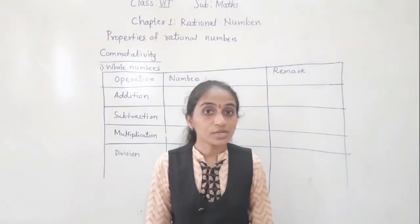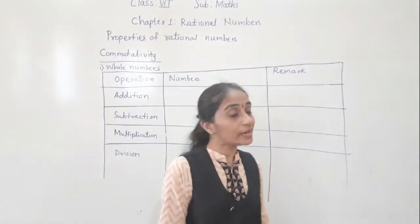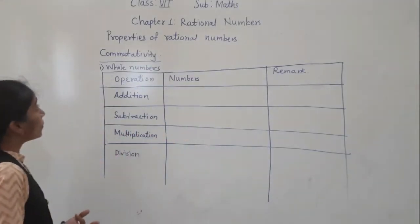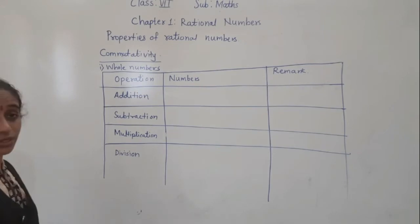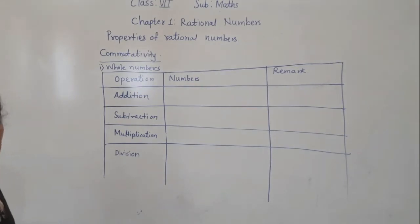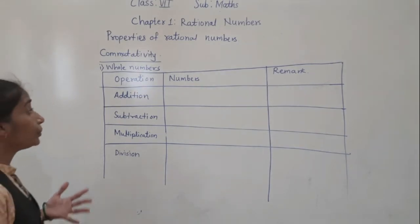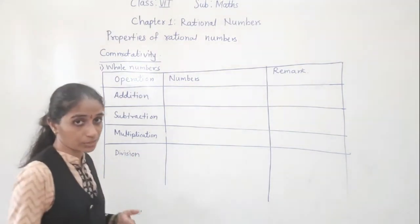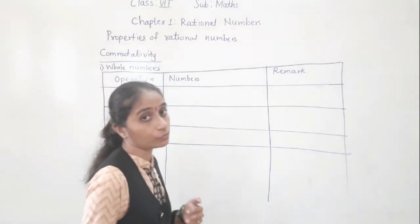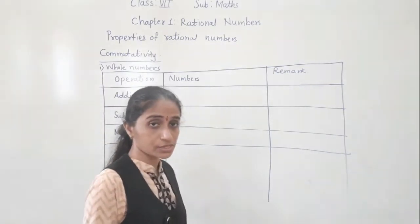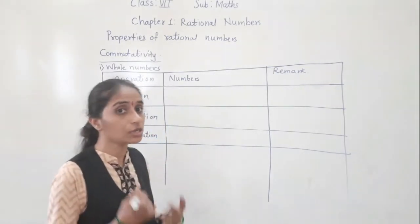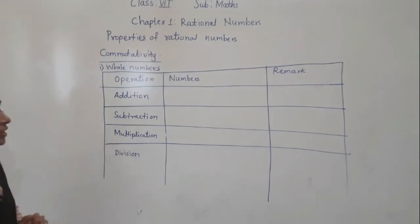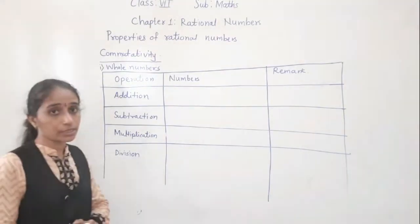Good morning students. Today we will move towards the next property: commutativity. This is the commutative property for whole numbers. First we will learn it for integers and then for rational numbers. Now, what is commutative property?